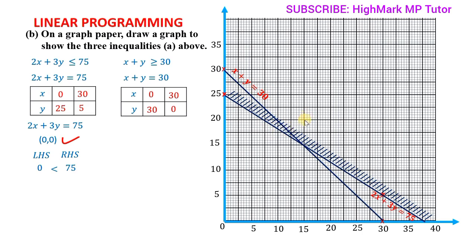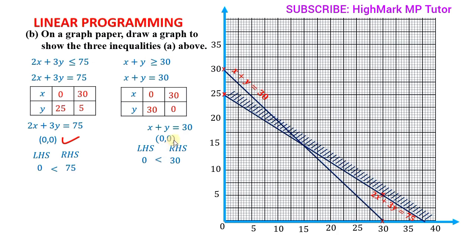We identify which side to shade for x + y ≥ 30. Using the origin (0, 0) as a test point, the left-hand side gives 0 and the right-hand side is 30. Since 0 < 30, but the inequality requires greater than or equal to, the signs do not agree. This means the origin lies on the unwanted side, so we shade the lower side where the origin lies.